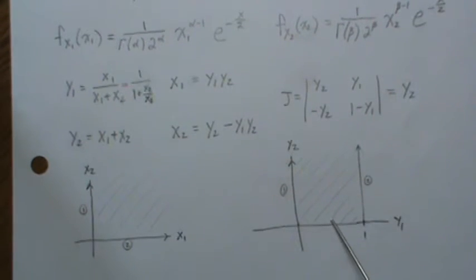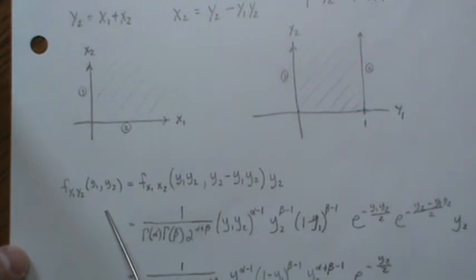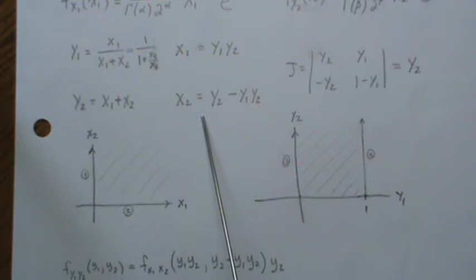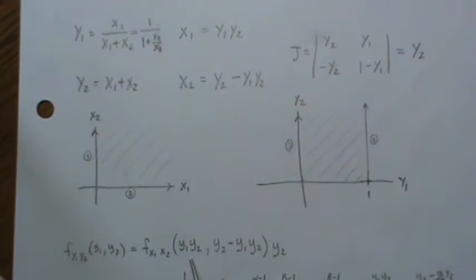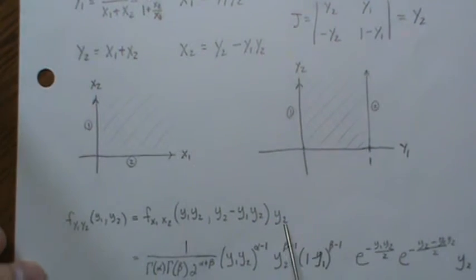So this is our region that we're mapping to. When we integrate out Y2, we're going to go from 0 to infinity. Now to find the joint density of Y1 and Y2, we find the joint density of X1 and X2 and then plug in the values where we back-solved for X1 and X2.